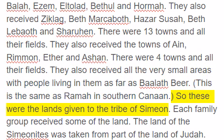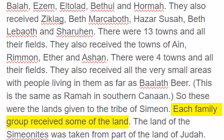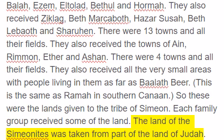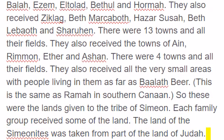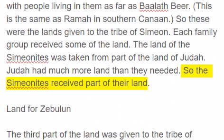So these were the lands given to the tribe of Simeon. Each family group received some of the land. The land of the Simeonites was taken from part of the land of Judah. Judah had much more land than they needed, so the Simeonites received part of their land.